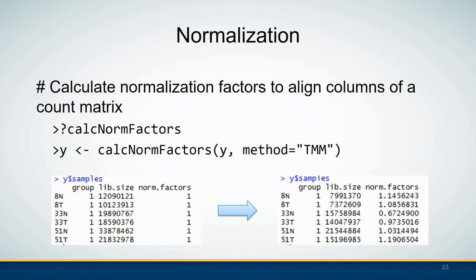In edgeR, the normalization factors are calculated using the calcNormFactors() function. If you don't know how to use a function in R, always put a question mark in front of it and the help documentation will give you detailed instructions on how to use that function.